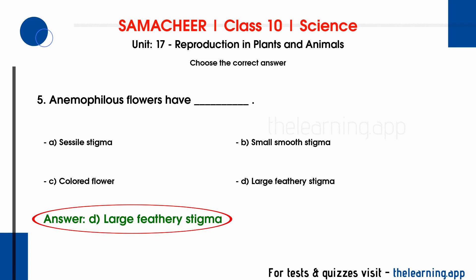Anemophilous refers to wind pollination. In pollination, pollen grains — the male reproductive parts — are transferred to the stigma, the female reproductive part. Fertilization follows pollination. The transfer of pollen grains from male to female reproductive parts, that is to the stigma, is pollination.